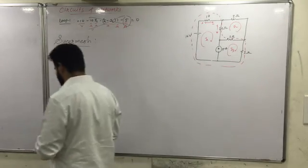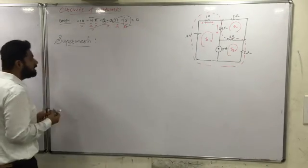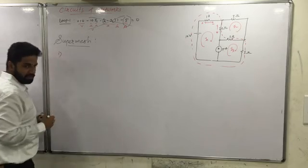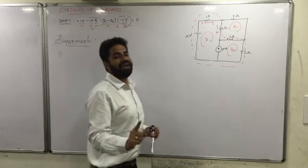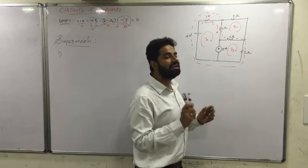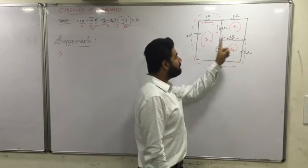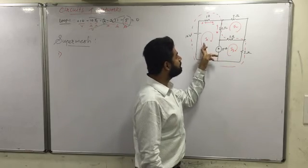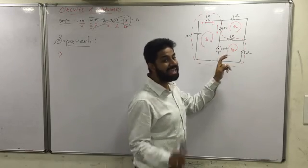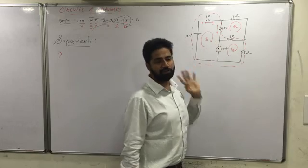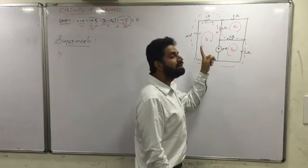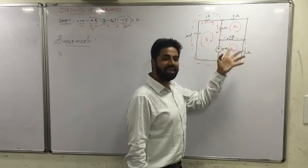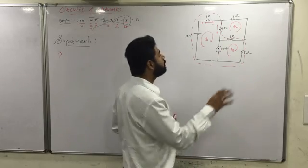So how to solve this kind of example — there are two things we will remember. First, we will find out the relationship in between two loop currents in terms of the given current source.